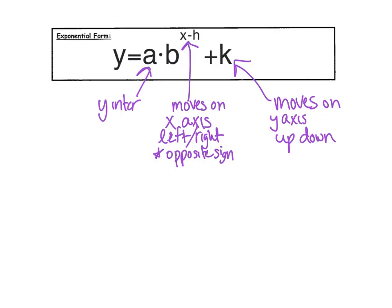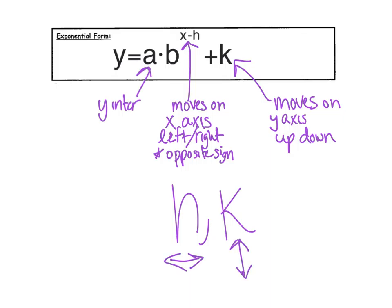So h and k tell us how the graph moves. We have this J-shaped or L-shaped curve, and it moves based on h and k: h goes left or right, k goes up or down. A is the y-intercept. All these features help us write an equation and graph it.